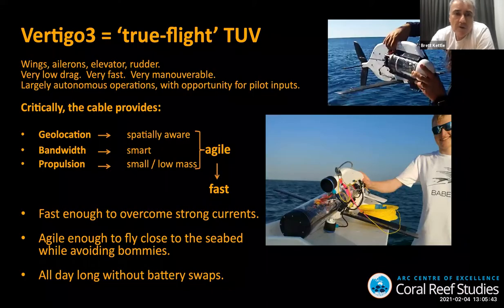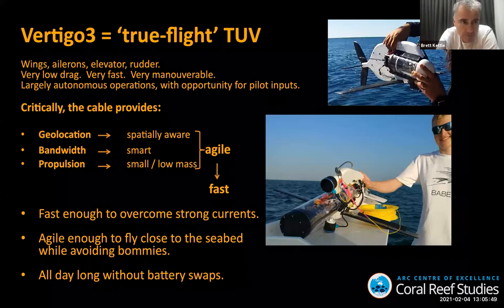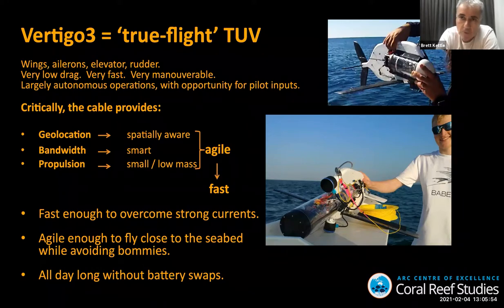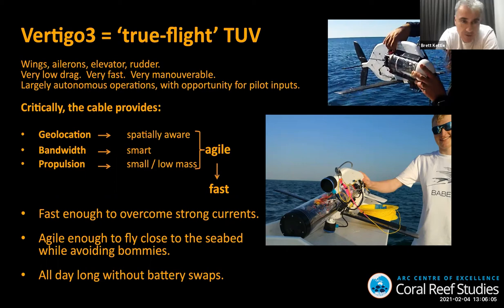Vertigo 3 has been very deliberately designed to mimic true flight underwater — wings, ailerons, elevators, rudders — with very, very low drag. When I say that, I'm talking about when it's being towed in an operational sense, relatively shallow: total drag forces of the glider are less than one kilogram. This means you don't need a big boat, and you can pull them very fast without them putting a lot of drag on.